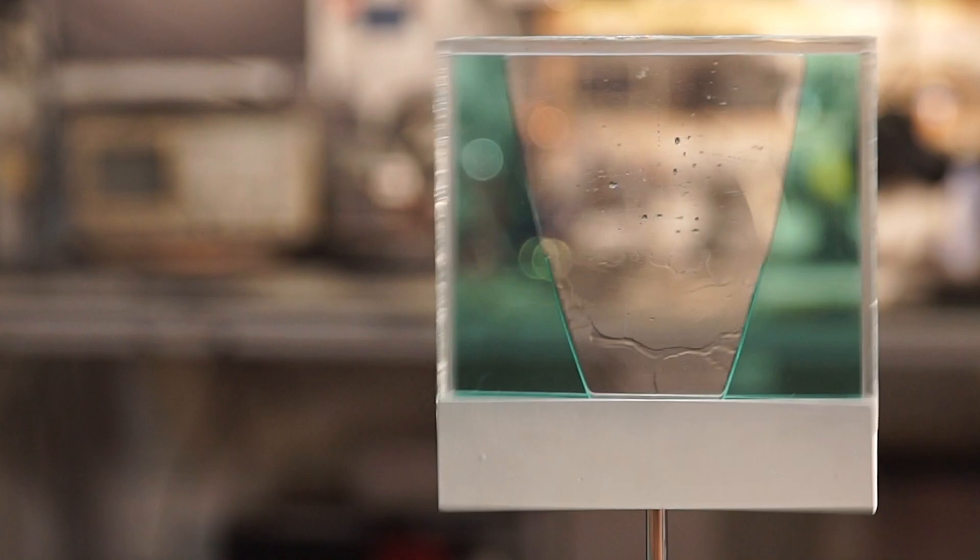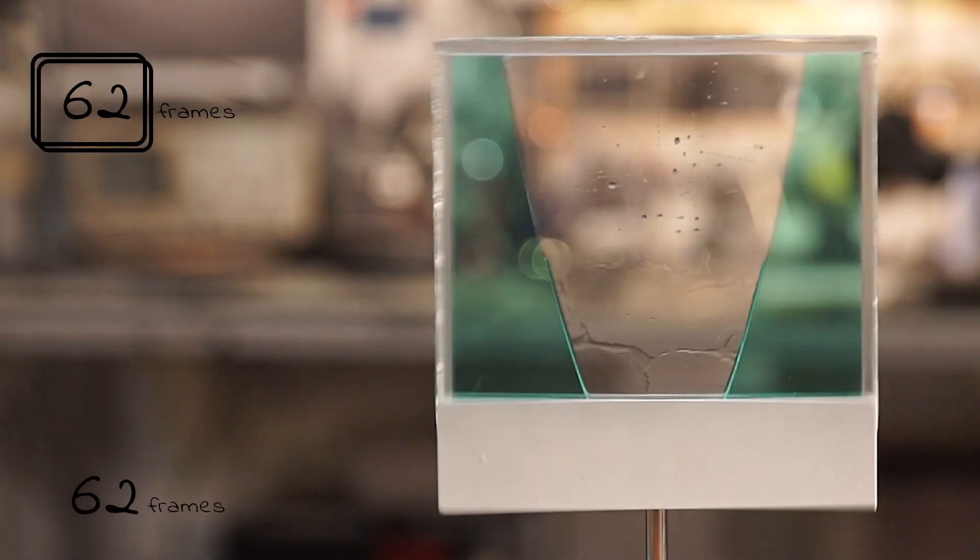Calculating the actual RPM by counting the amount of frames it took to complete a full revolution, we get 290 revolutions per minute, which given our very crude methods, is basically the same number.